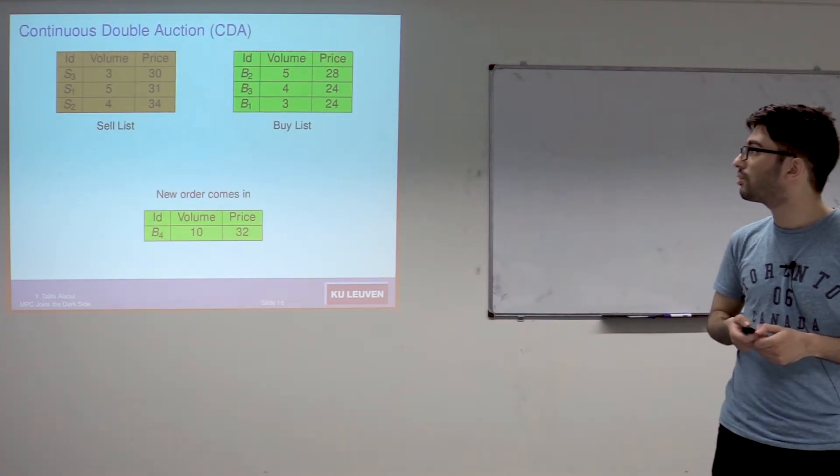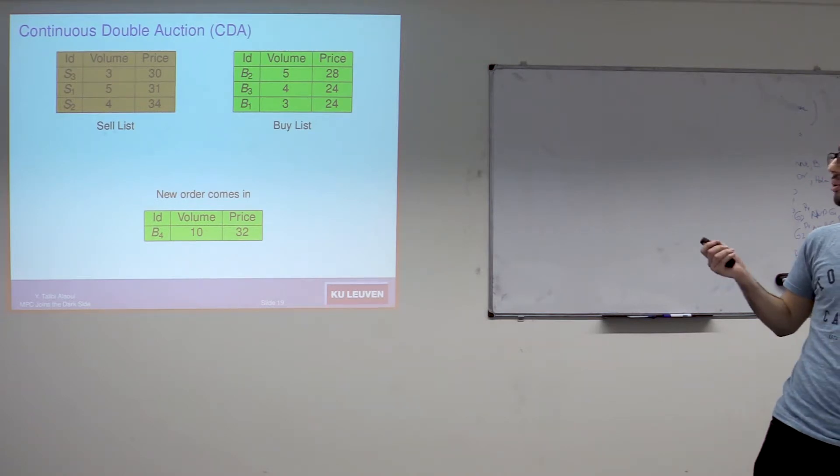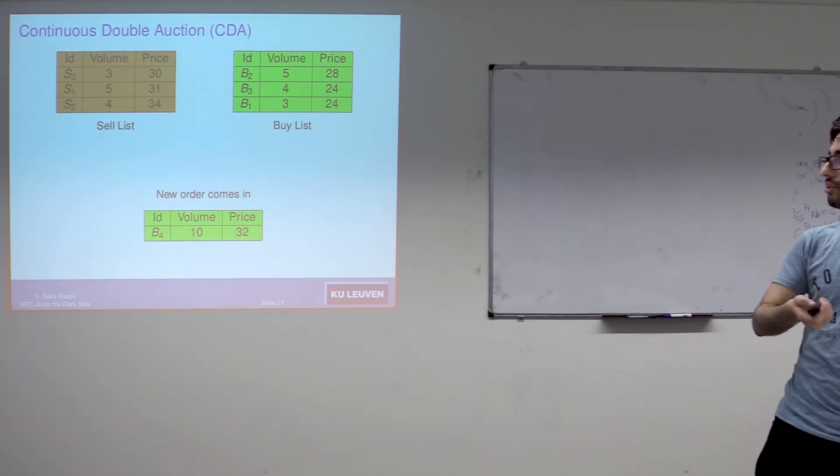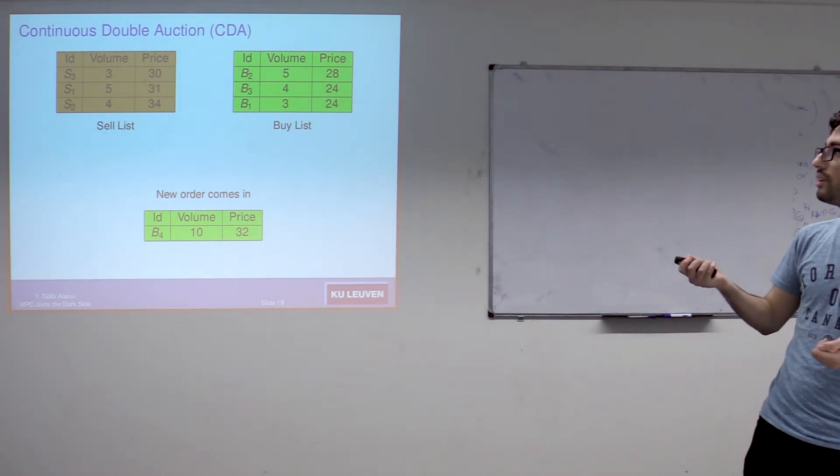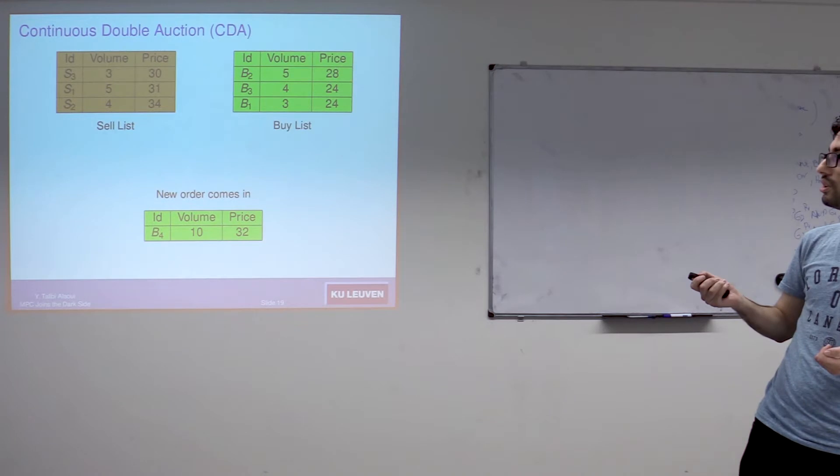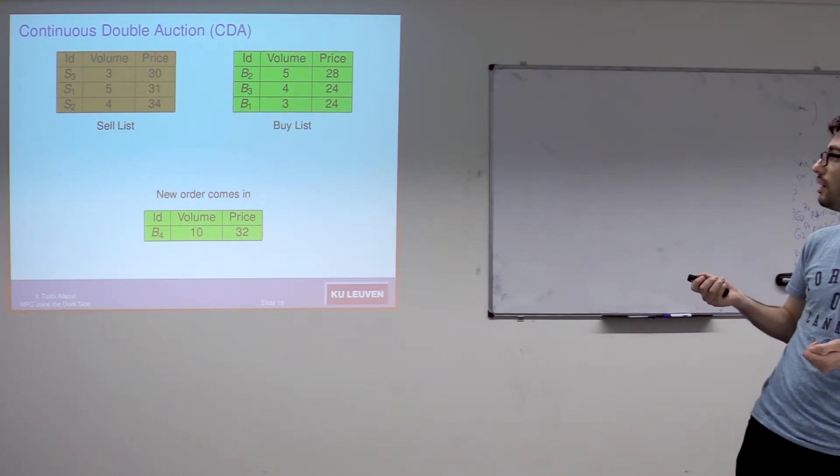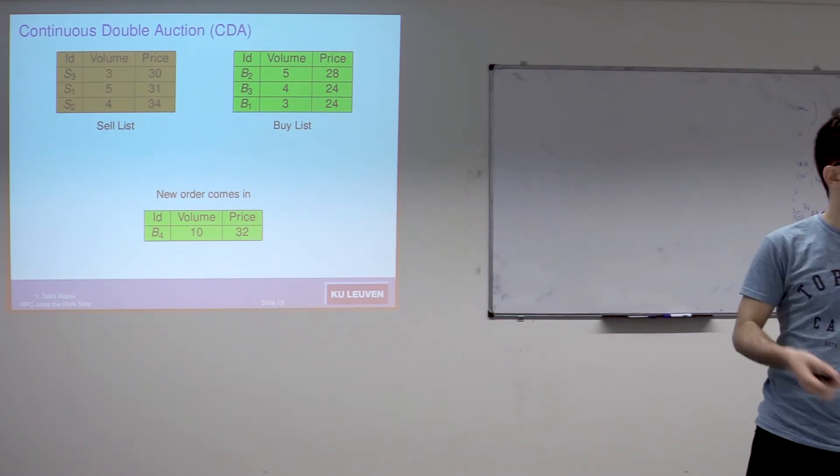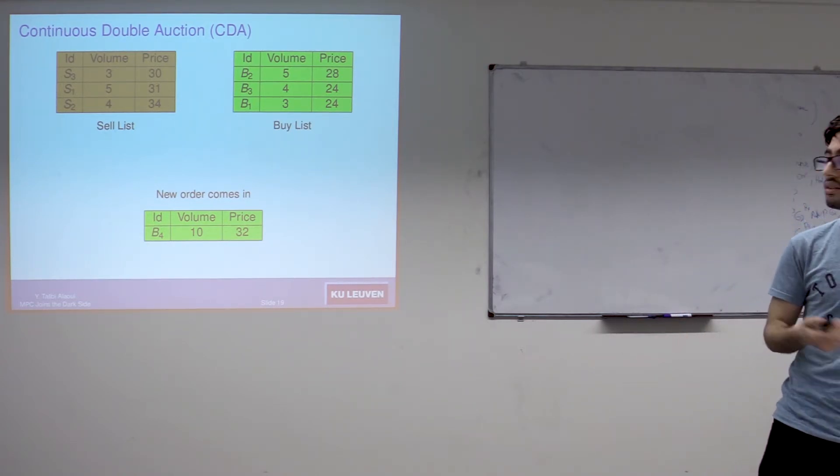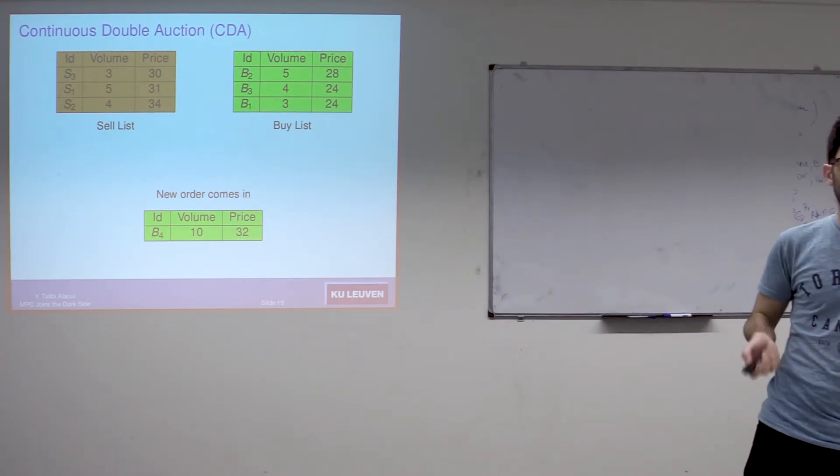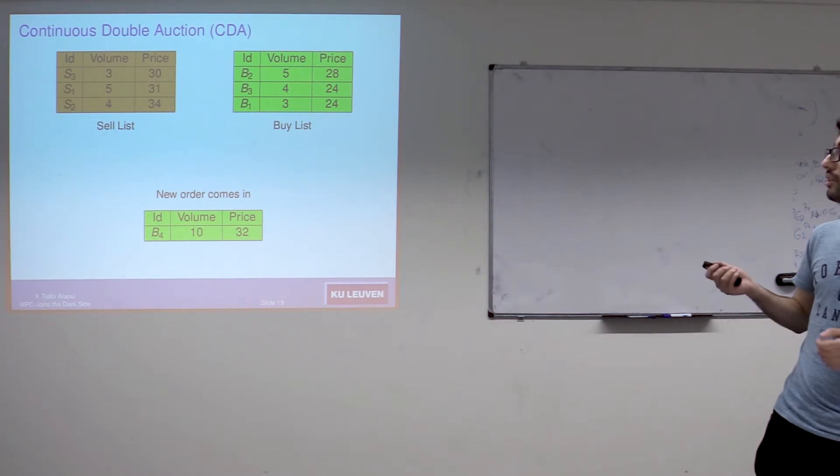The first algorithm is the continuous double auction. Basically here we have the order book, which contains two lists: the sell list and the buy list. We sort orders with respect to price. An order is defined by the identity of the one who placed that order, the volume - how many shares this guy wants to buy or sell - and the price - how much this guy is willing to put to sell that stock or to buy that stock. Orders here are ordered with respect to the price.